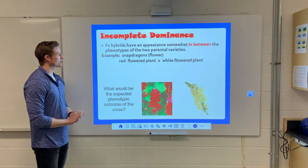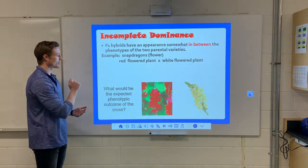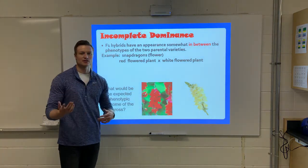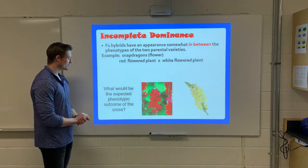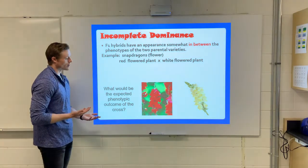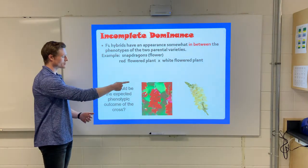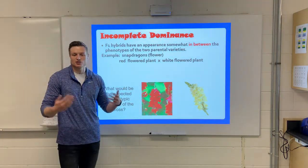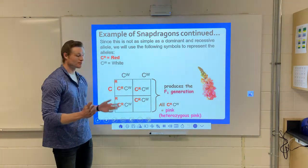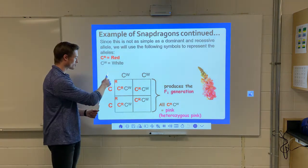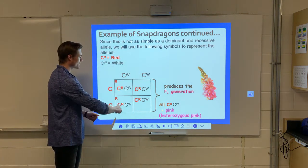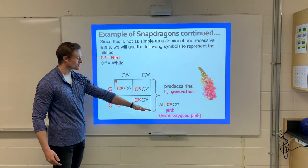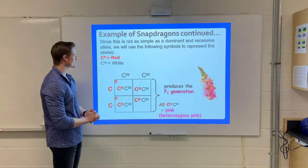For incomplete dominance, let's look at snapdragons. We have a red flower and a white flower. Normally, if both are homozygous, we'd expect all hybrids to be red. But when we take a look at it, they're not — they end up being pink. When we cross them, we end up getting all pink because this is incomplete dominance. All of our heterozygous individuals end up being a blended phenotype of red and white.